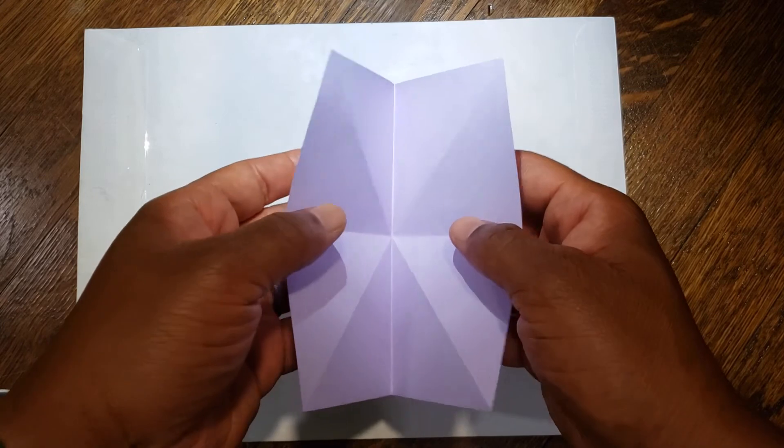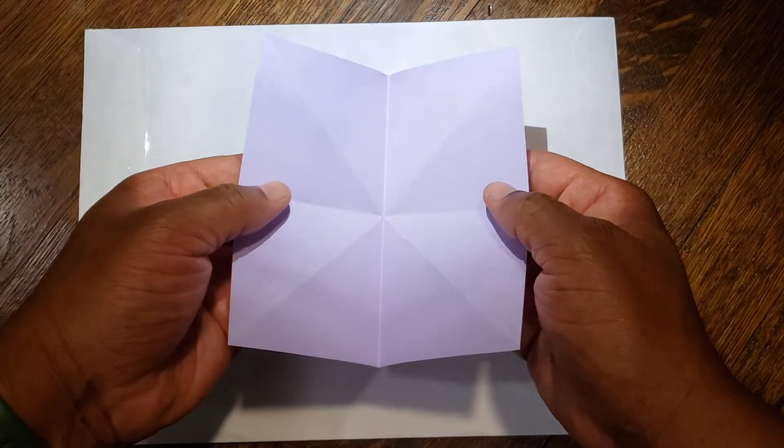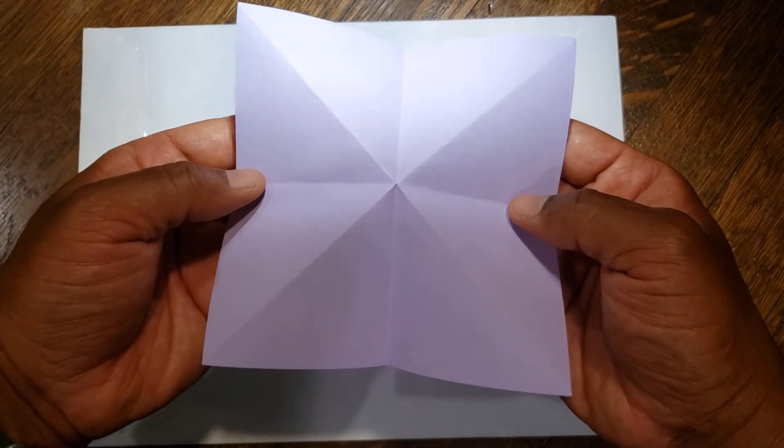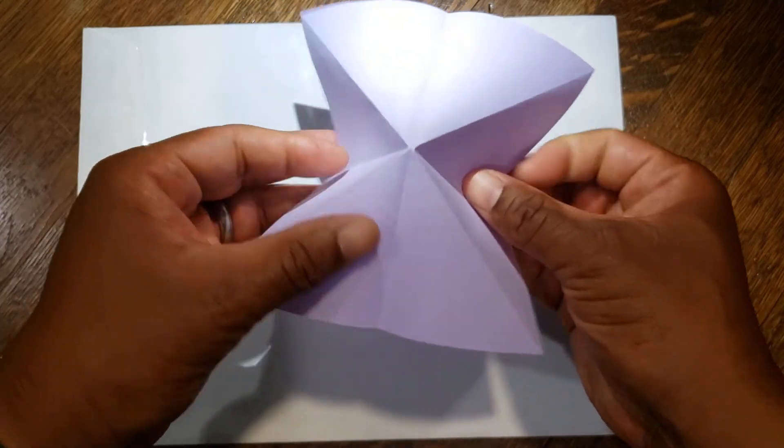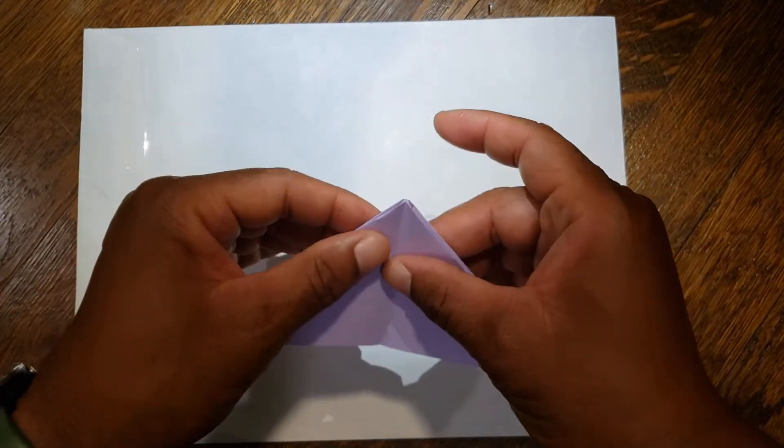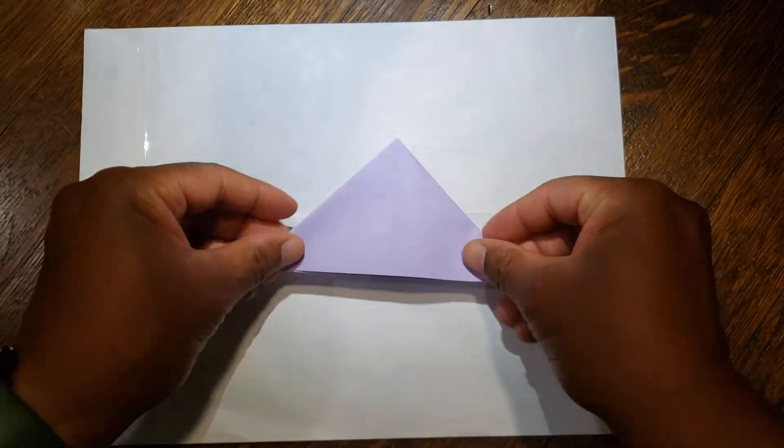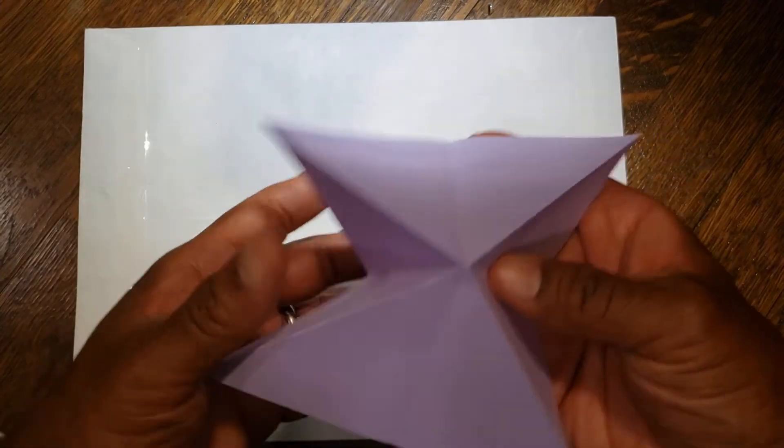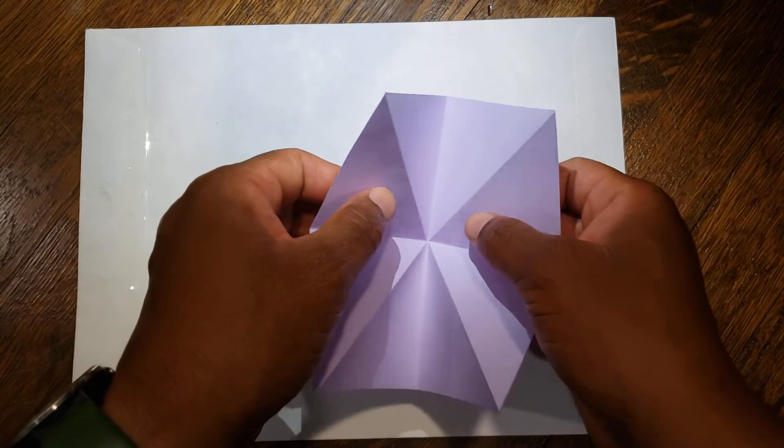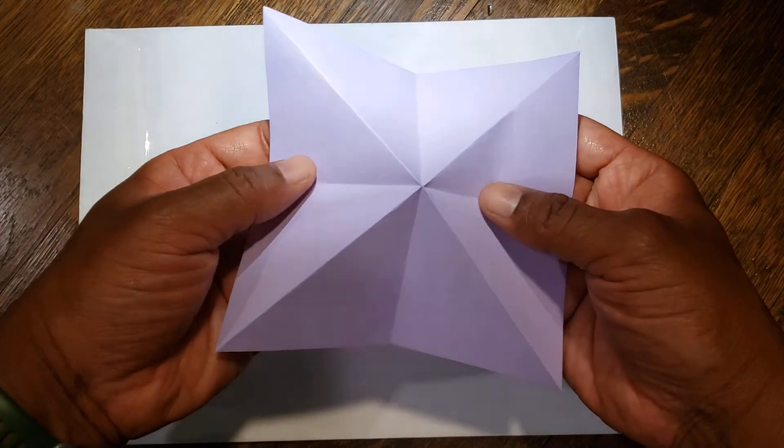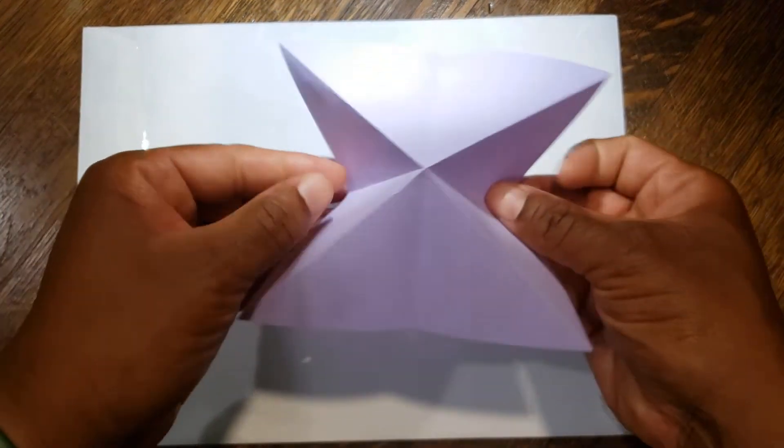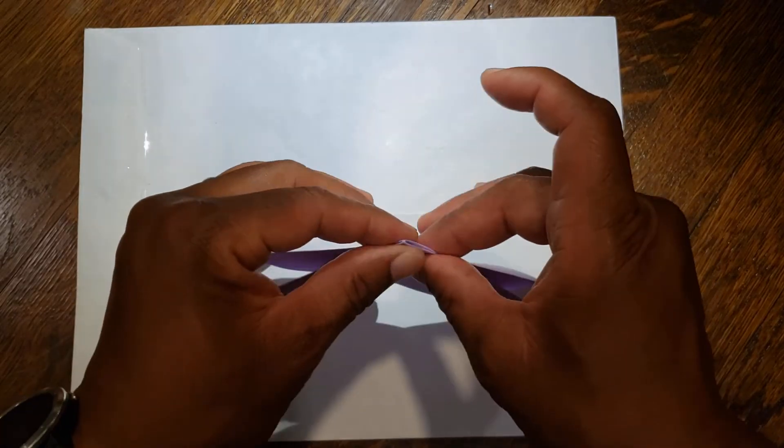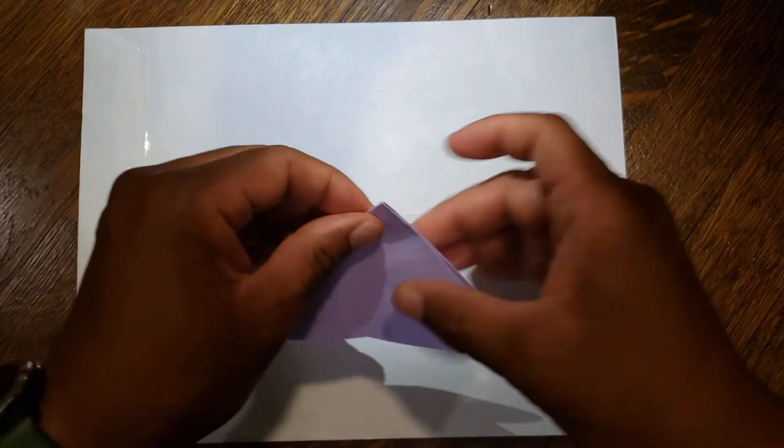From here, hold it like you're holding a book. You're going to push up from the bottom and it should snap. Your left and right sides are going to collapse down, and you're going to end up with a giant triangle.